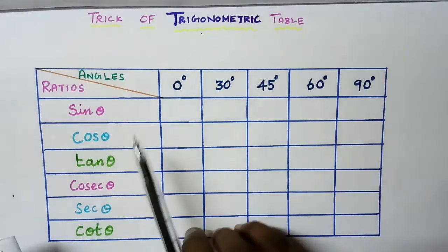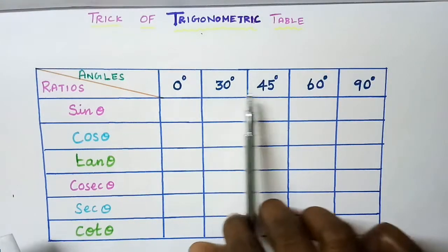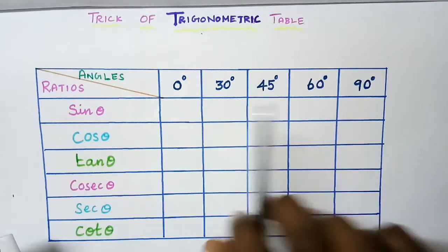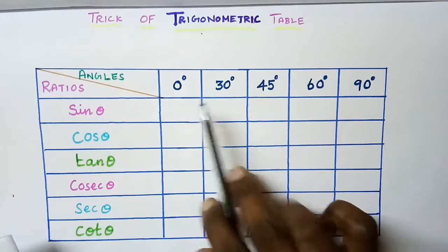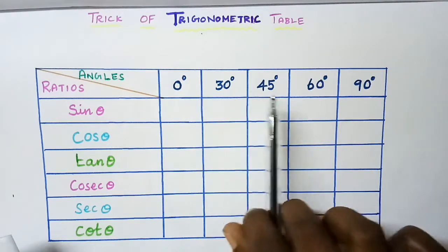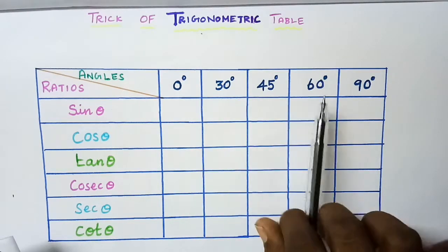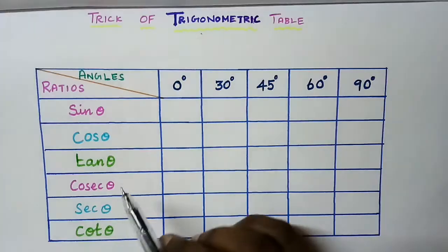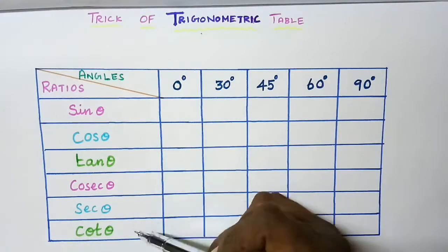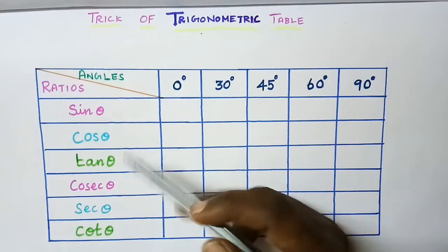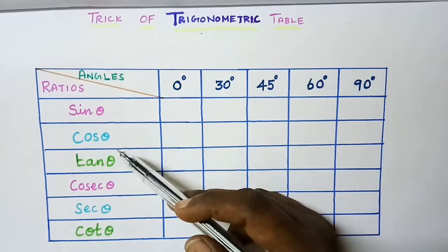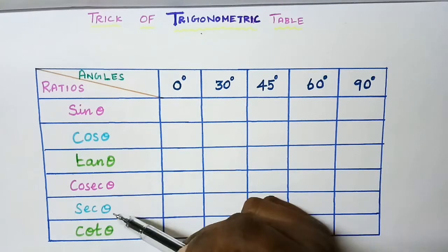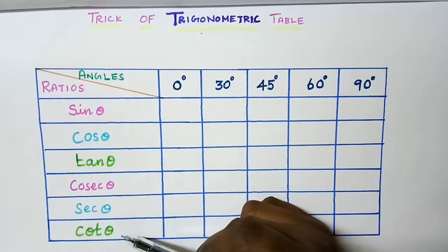The angles are written horizontally in increasing order: 0 degree, 30 degree, 45 degree, 60 degree, and 90 degree. The ratios are written vertically: sin theta, cos theta, tan theta, cosecant theta, secant theta, and cot theta.